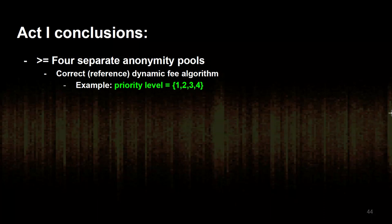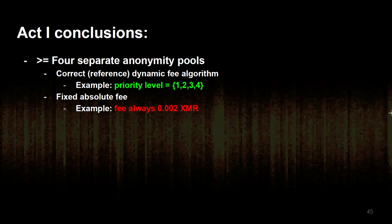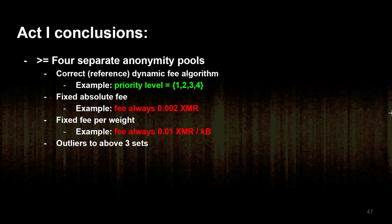Conclusions from Act 1: we have four separate anonymity pools based on fees. There is the correct reference pool where people selected priority level one, two, three, or four. Then we have people with a fixed absolute fee — for example, always 0.002 Monero. We have people with a hard-coded fixed fee per weight — for example, 0.01 Monero per kilobyte. And then outliers to those three sets. My main recommendation is eliminating high-precision fees: it makes transactions smaller and reduces information leakage. Fee fingerprinting can also be combined with other heuristics — basically any heuristic can be combined with any other.